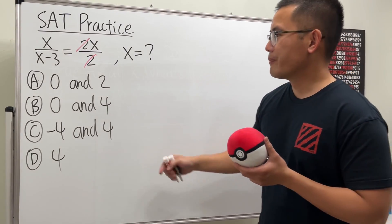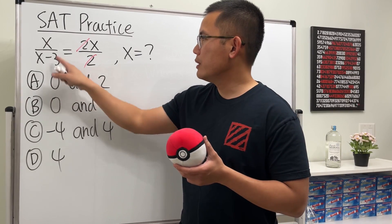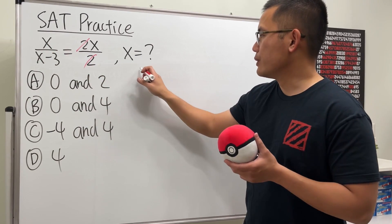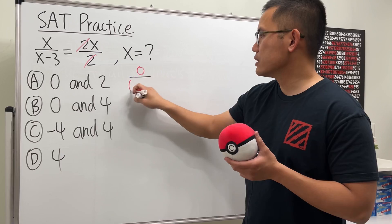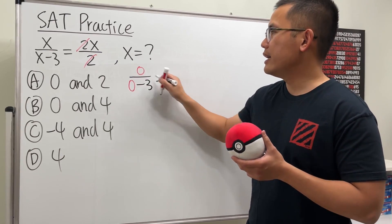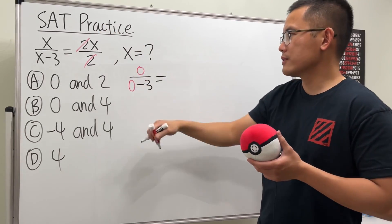So we are going to plug in zero into all the x's. So when we do that we get zero over zero minus three, and again you can always cancel that two first, right? I don't know why.